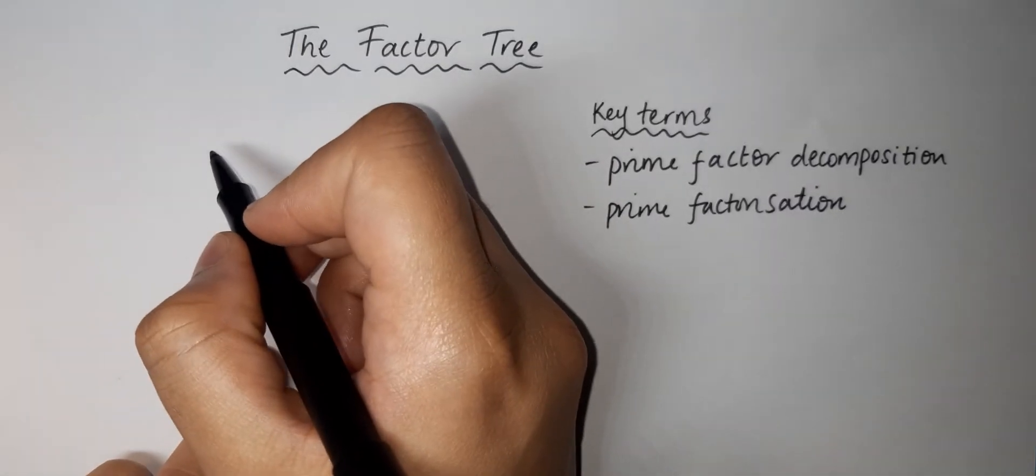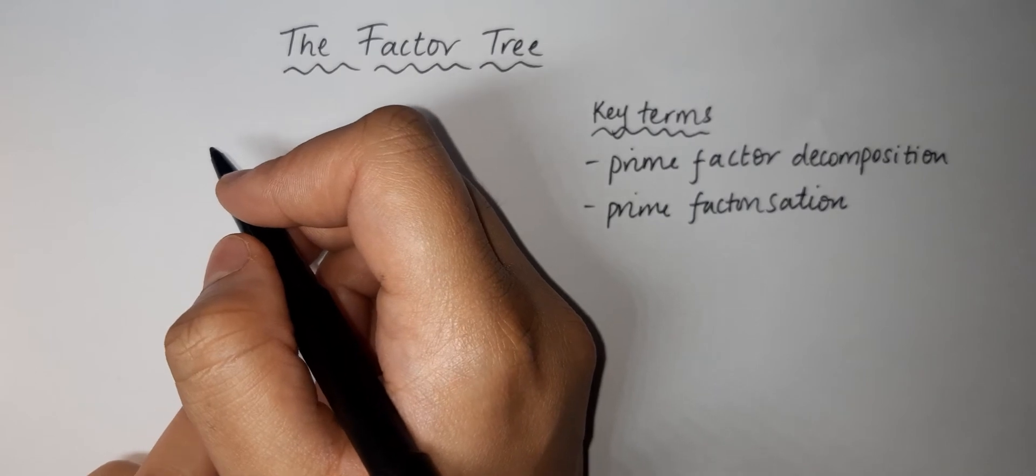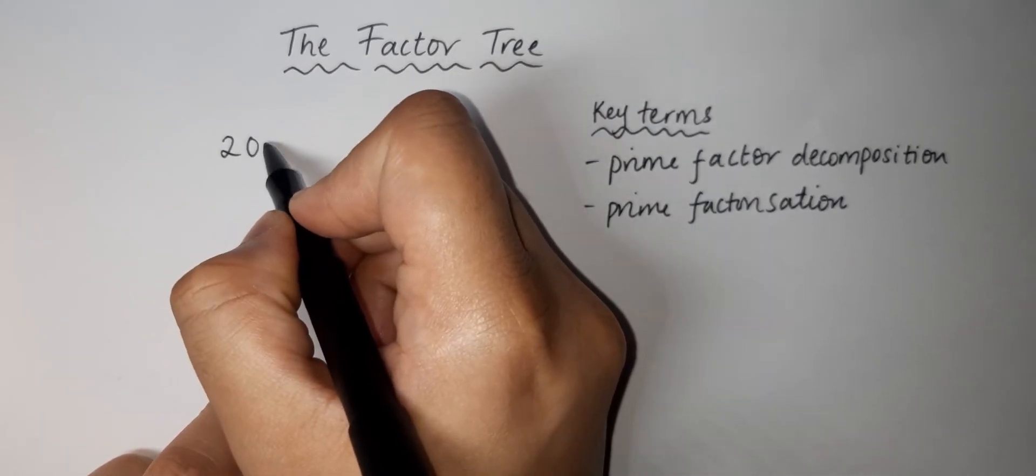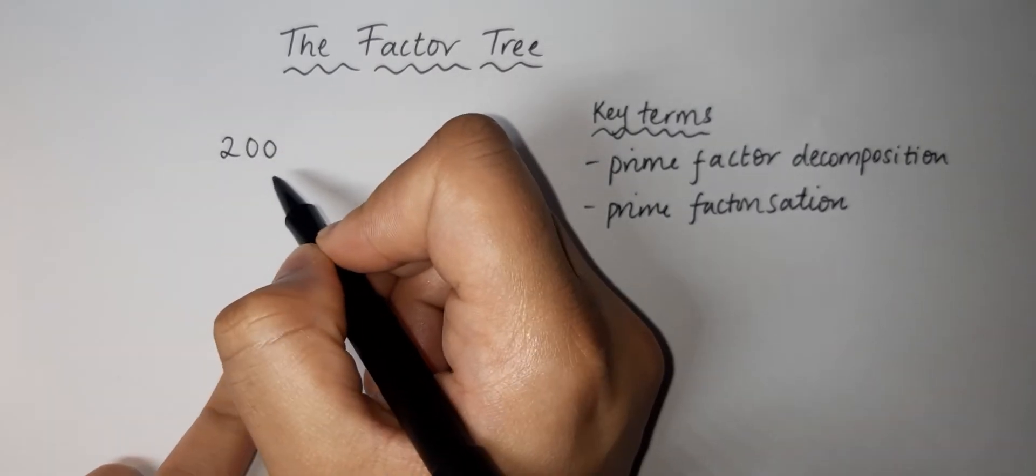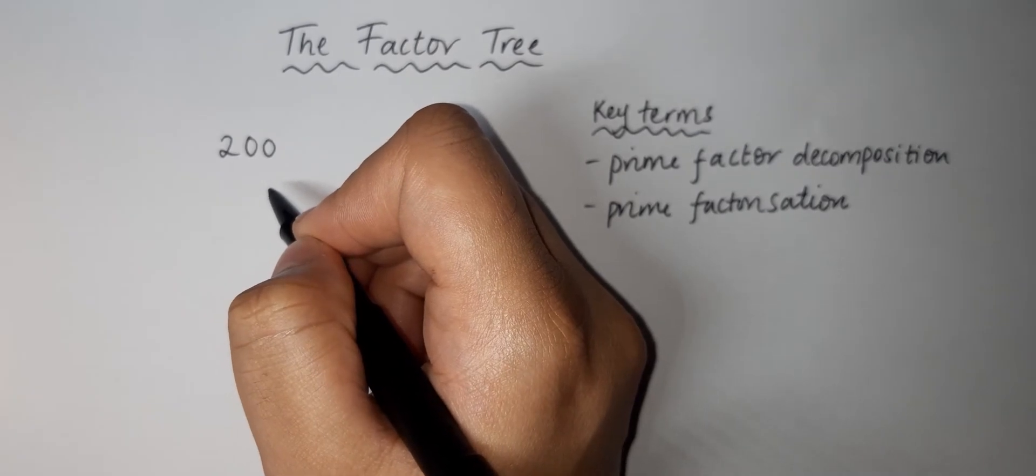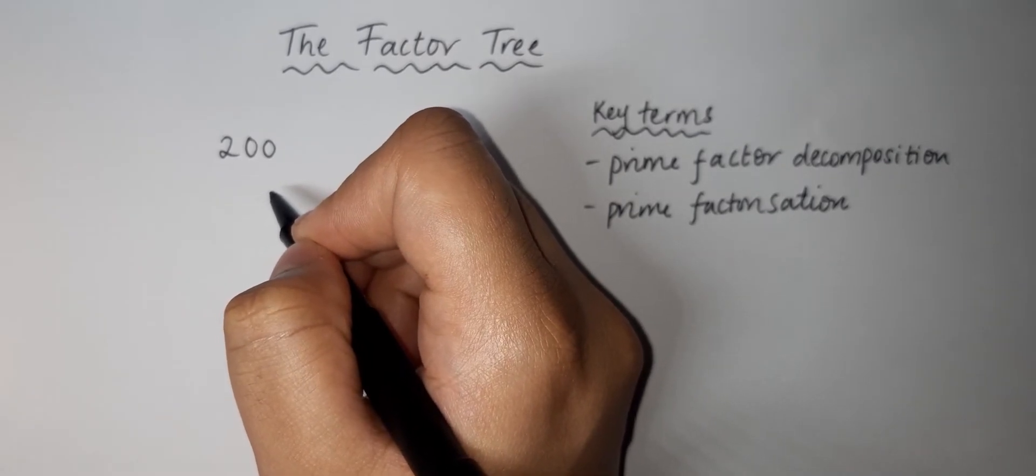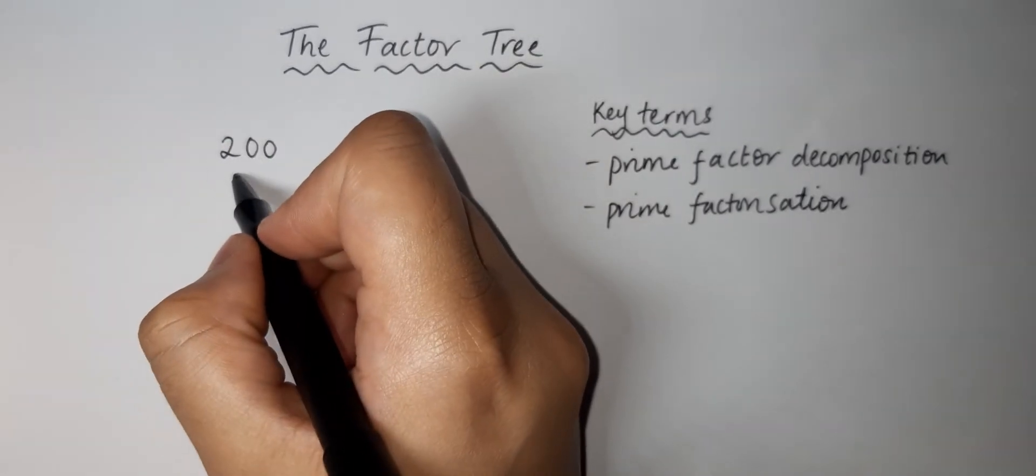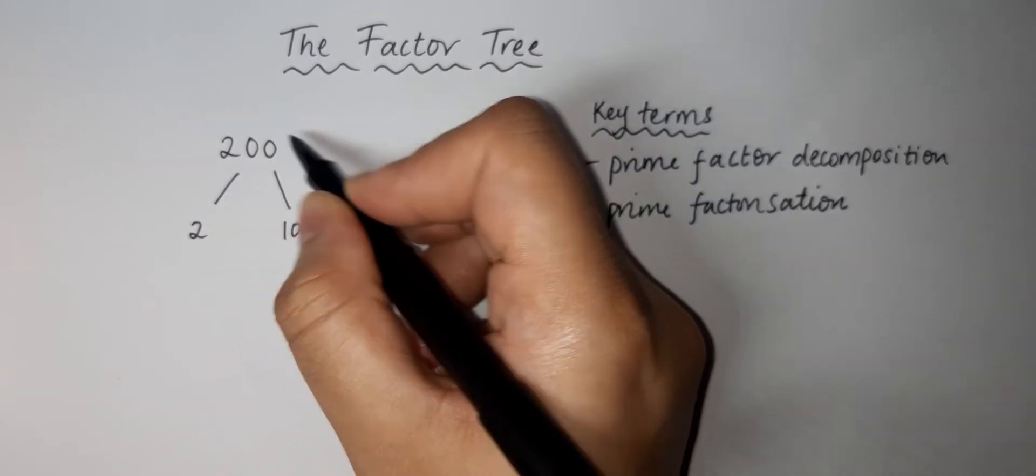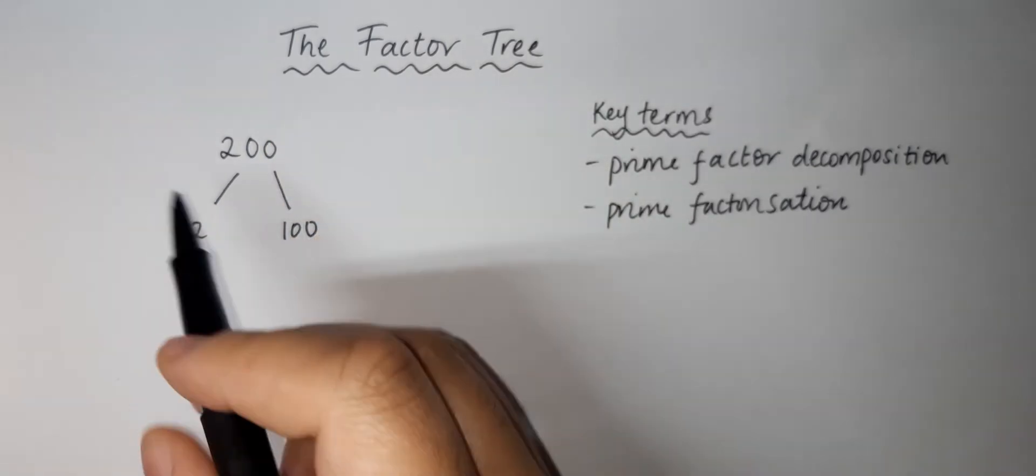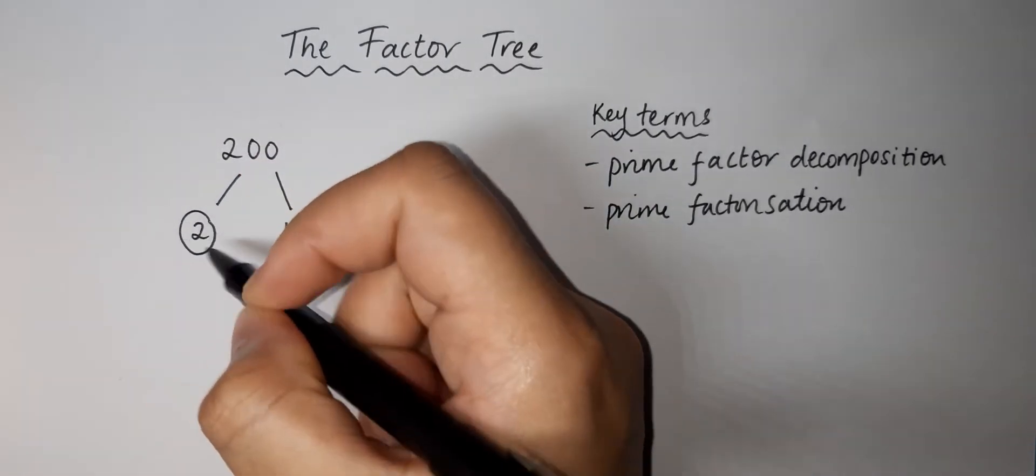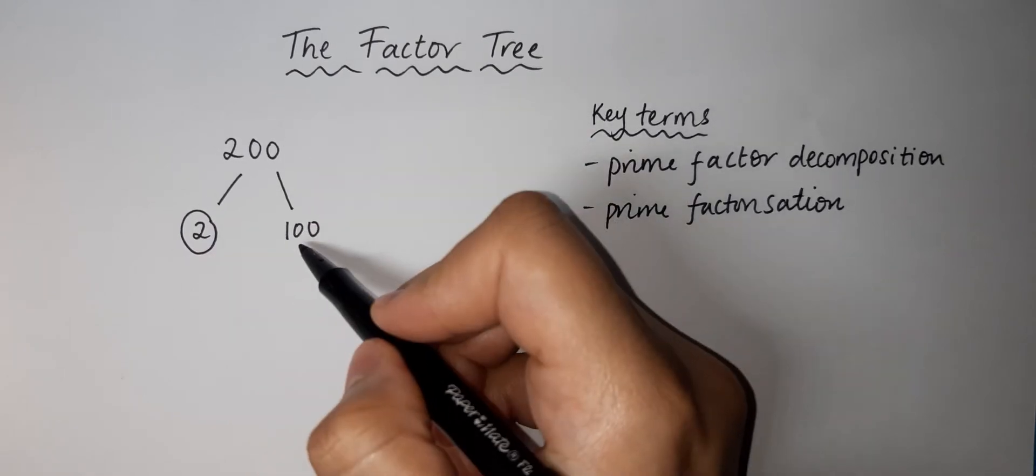If the question was find the prime factors of 200, we write 200 at the top. The first thing we do is look at what we can multiply together to get 200. One of the easiest ways is 2 times 100, which gives us 200. We see that 2 is a prime number, so we circle it. We can't cut this down any further, so we look at 100.